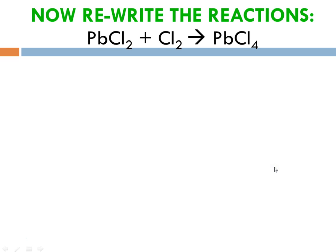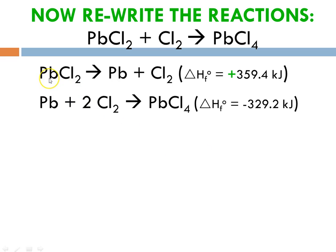Now we're going to rewrite these reactions, taking into account the one that we had to flip so it's on the reactant side. Lead(II) chloride is again on the reactant side, along with the lead and the 2 chlorines. I need to point out that when we invert this reaction, we have to change the sign for the delta H because we have flipped the reaction to give us the reverse reaction.